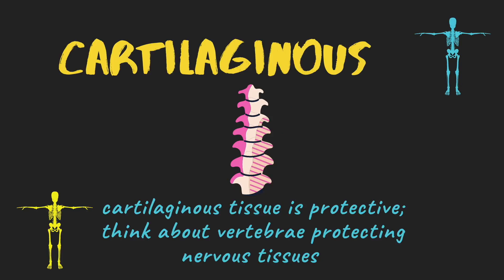Next is 'cartilaginous' — a really long word that sounds daunting, but all you need to think about is that cartilaginous tissue is protective. The vertebrae is an example of a cartilaginous joint, and the vertebrae's main focus is protecting all of your nerves and everything from your central nervous system — the link from your brain to the rest of your body. It's really important to know the cartilaginous joint is the vertebrae and its purpose.